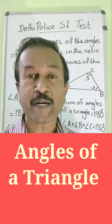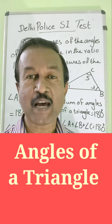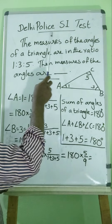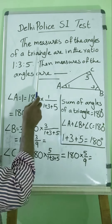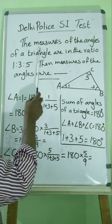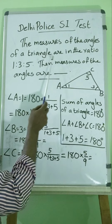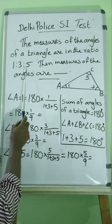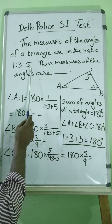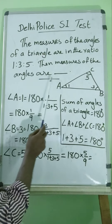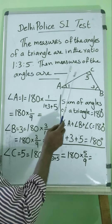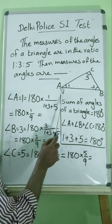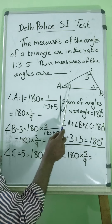Namaskaran. Let's look at this math question. The measures of the angles of a triangle are in the ratio 1:3:5. Then the measures of the angles are — dash. For this question, let's draw a sample triangle diagram.